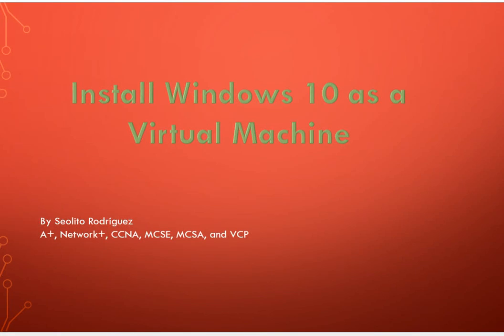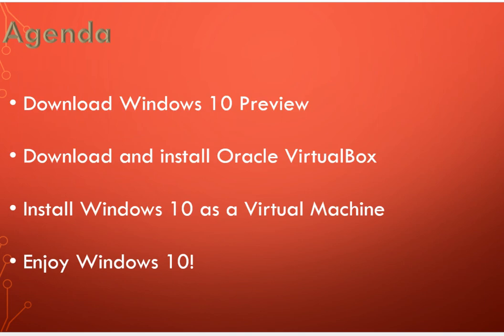Hello, my name is Elidio Rodriguez and in this video tutorial we're going to install Windows 10 as a virtual machine. Here is the agenda for this tutorial. We are going to download Windows 10 Preview, which is already out at the time of this recording. Windows 10 is coming soon — it's the replacement for Windows 8.1. There's no Windows 9; for marketing reasons, Microsoft decided not to have a Windows 9. We're going to download and install Oracle VirtualBox, a virtualization program, and install Windows 10 as a virtual machine.